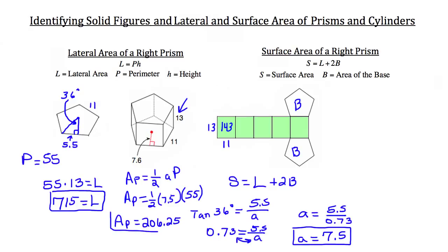So now that we have the lateral area calculated, and we have the area of the base calculated, which was that 206.25 square units, we can calculate the surface area.